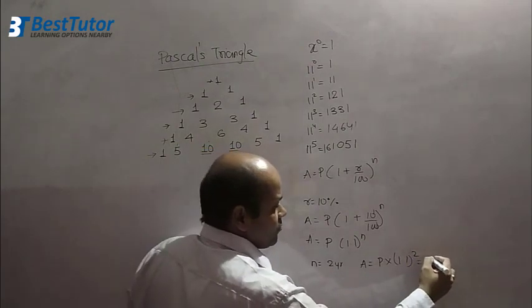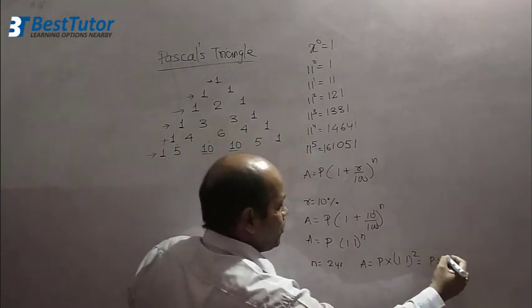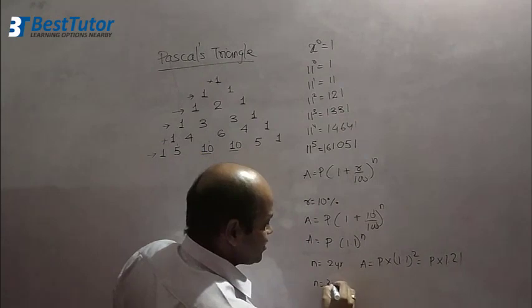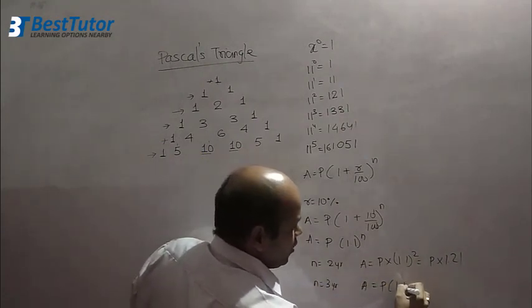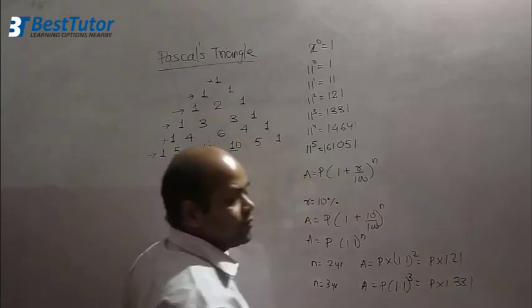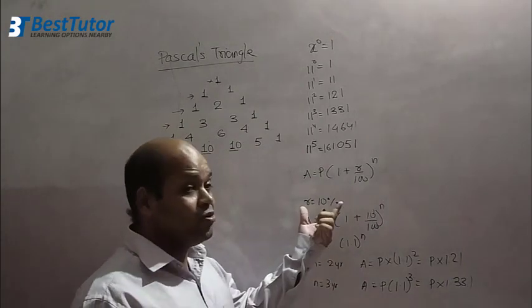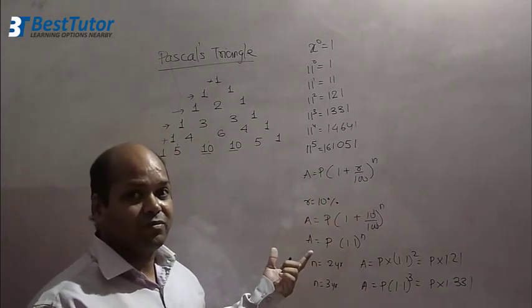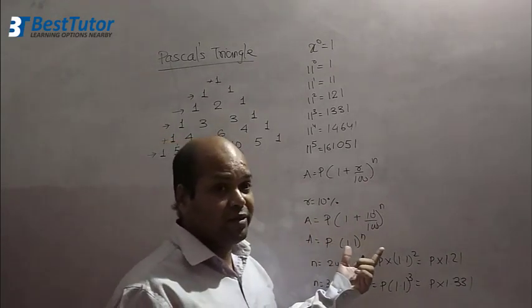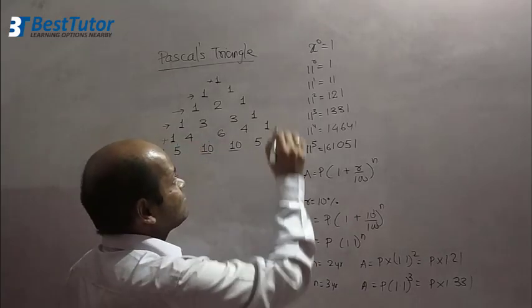Then I will solve this question directly as whatever P is, it is going to be 1.1 the whole square. So what would be the answer? Whatever P multiplied by, what is 11 square? 1.21. Just put the decimal point. If N was 3 years, A equals P into 1.1 cube, which is 1.331 and so on. So Pascal's Triangle helps us in doing calculations fast. If tomorrow or in future you go to a bank, you will do it faster than them because they will say get me a calculator. You will do it directly.